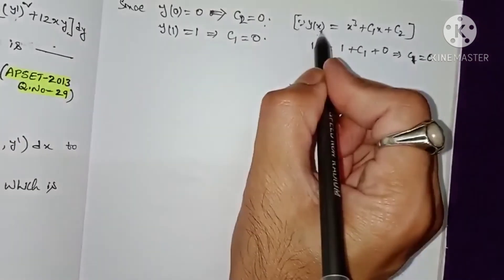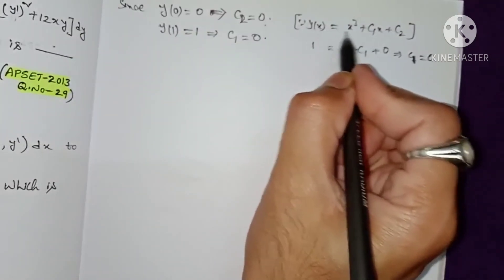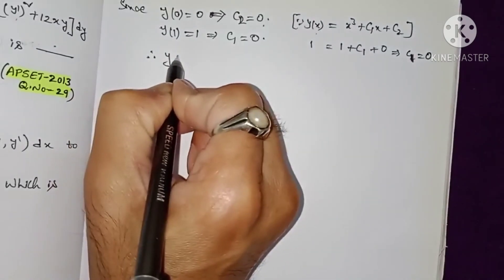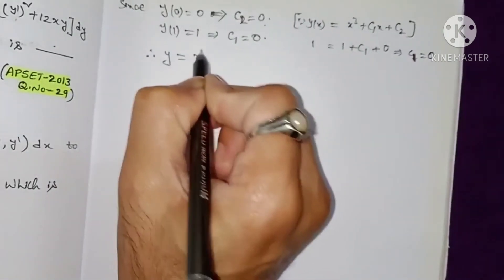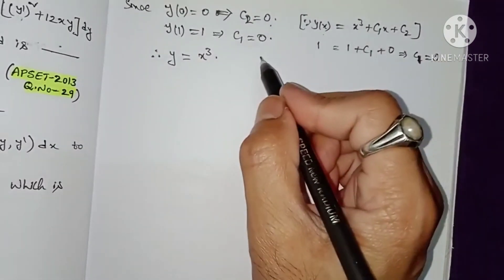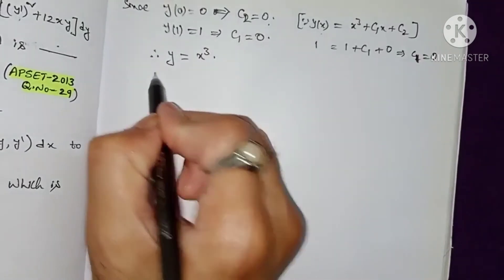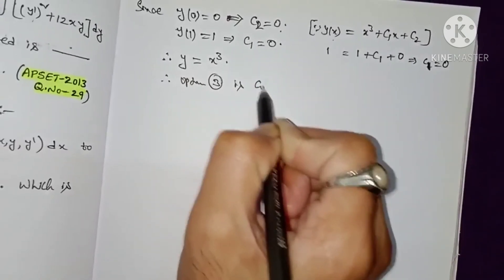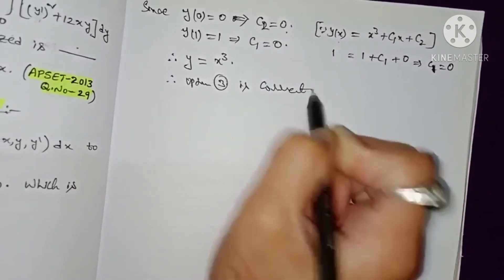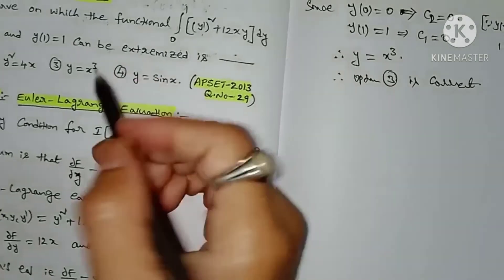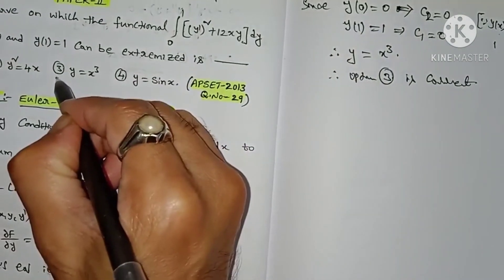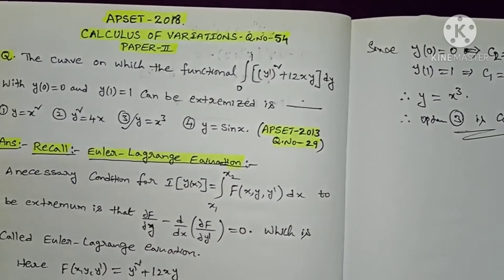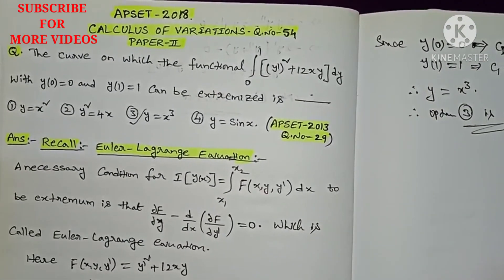Substituting these initial conditions into y(x), we get y = x³. Therefore, option number 3 is the correct answer. I hope you liked this video. If you liked the video, please share and subscribe. Thanks for watching.